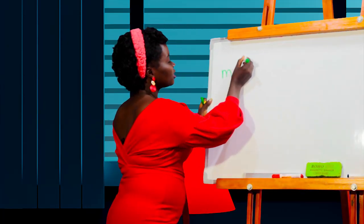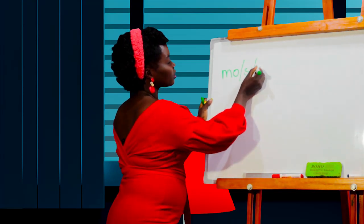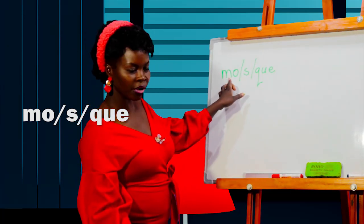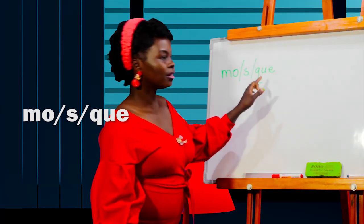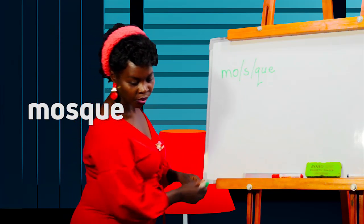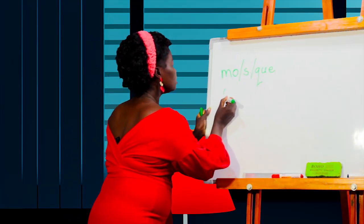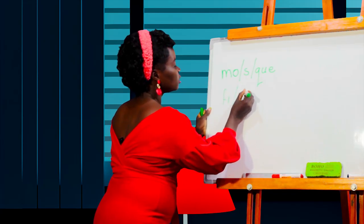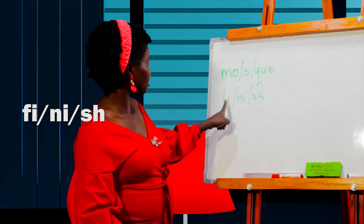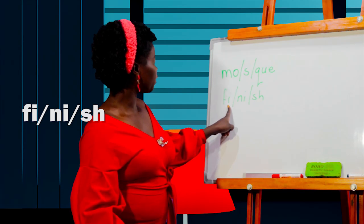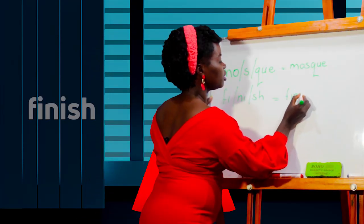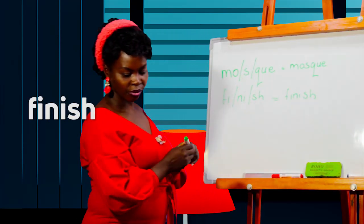Two more to go. Can you sound out this one? Remember, we segment words for easy reading and fluency. We have a syllable here — 'mo' — and these two letters are silent at the end. The word is mosque. Now for the next one, we use our syllables at the beginning and the middle. The word is finish. Well done!